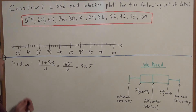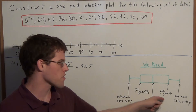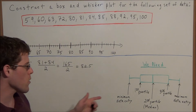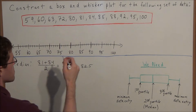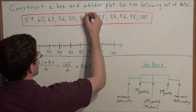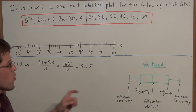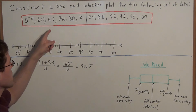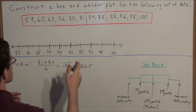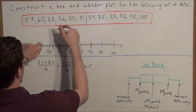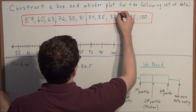Now that we know our median is 82.5, we need to find the first and third quartiles. The median is the middle number, so it cuts the data set in half. To find the first and third quartiles, we need to cut this data set into quarters — we cut the left half in half and the right half in half.